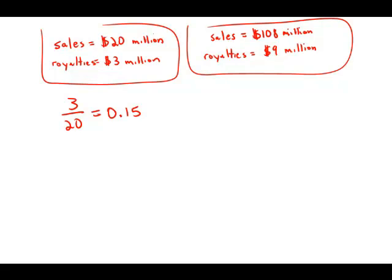The next ratio is 9 over 108. Well, 9 goes into 108 twelve times. This is 1 over 12, and 1 over 12, I'm just going to approximate this. This is approximately 0.08.